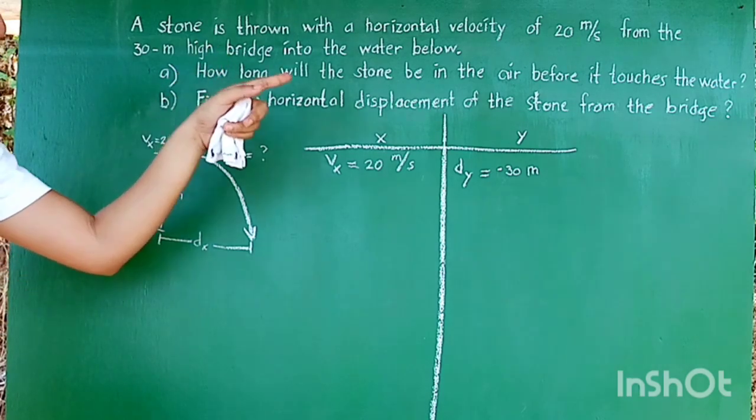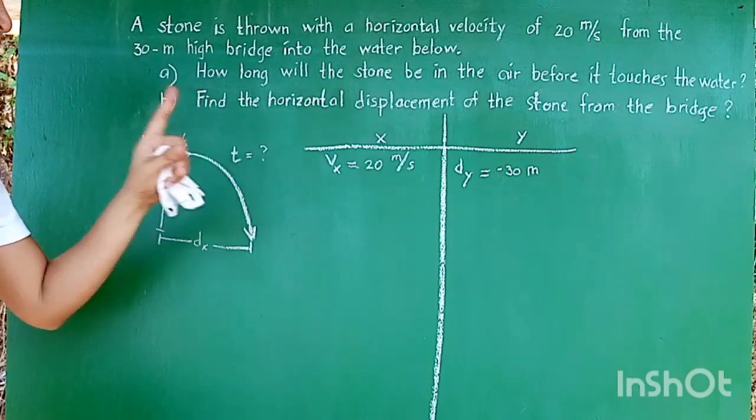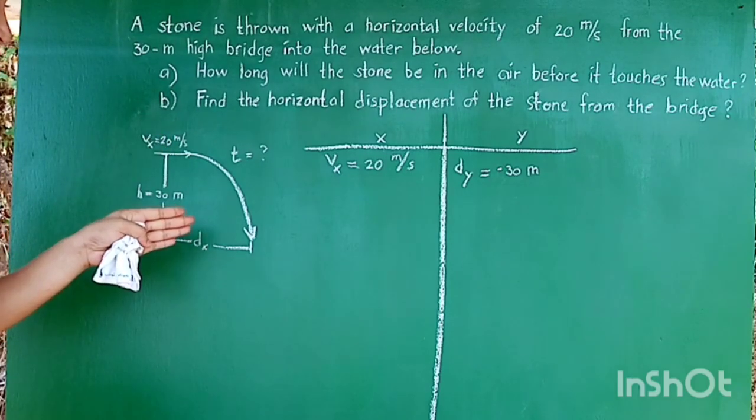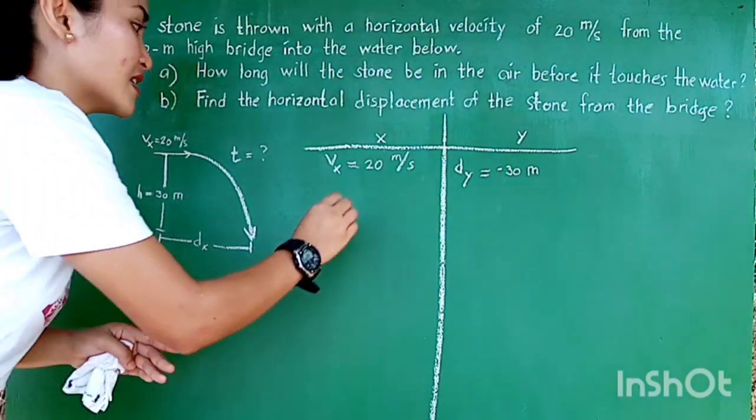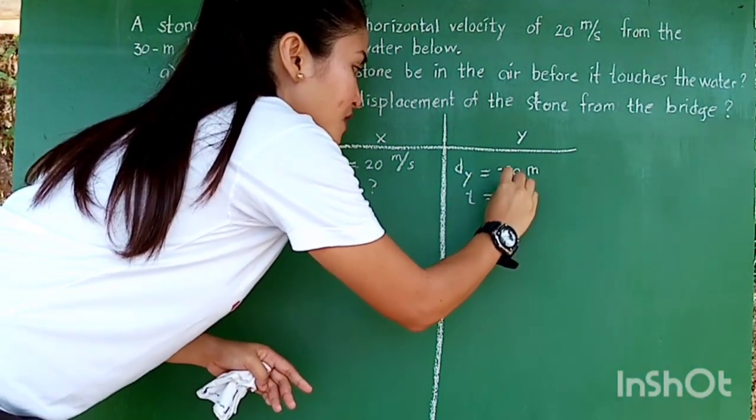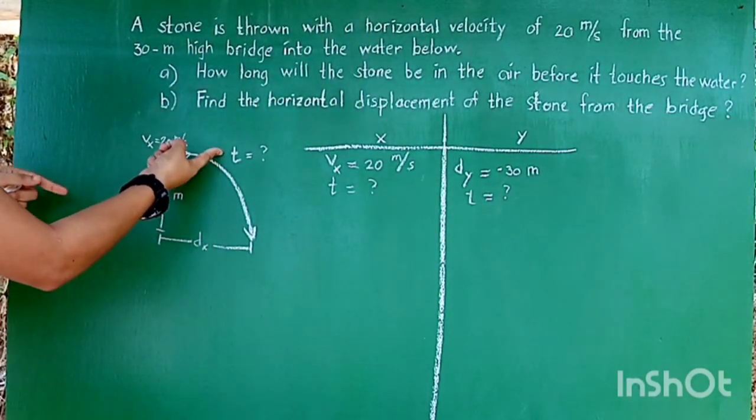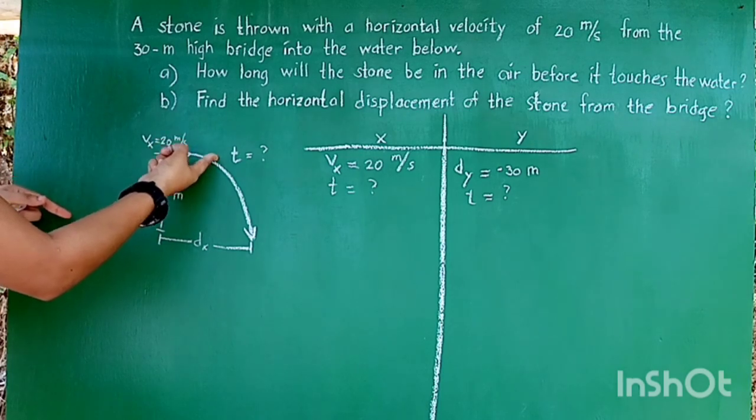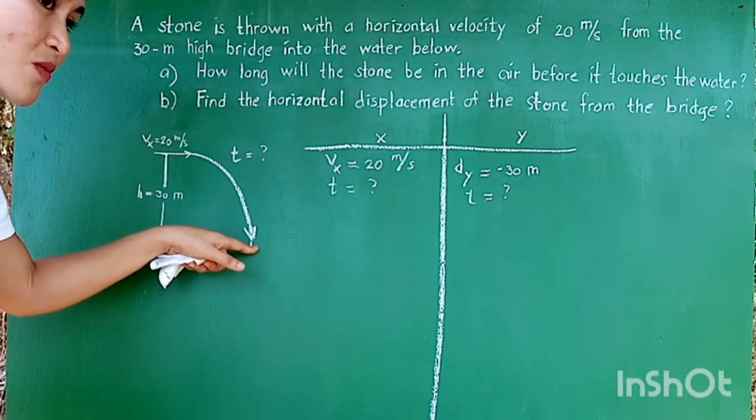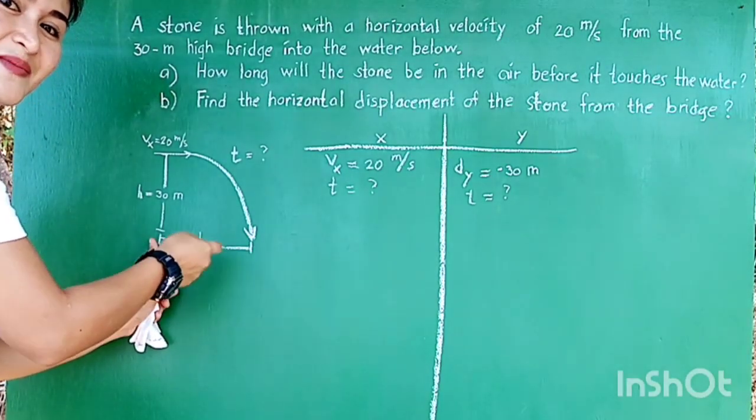Then, let's look at the ASK variables. The time. Time, remember, is the one that connects the X and the Y components. Okay, so in this example, horizontal projection, the time that we can solve in the X is equal to the time that we can solve in the Y. Why? Because, take note, when the stone is thrown from this point and it lands up to this point, the time taken for the stone to reach this water below is equal to the time it took for the stone to cover a certain range in this DX. So the same.